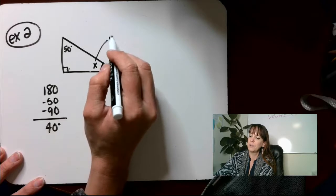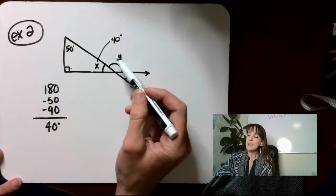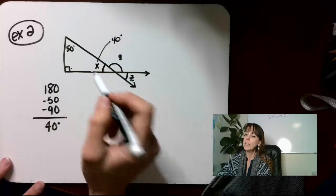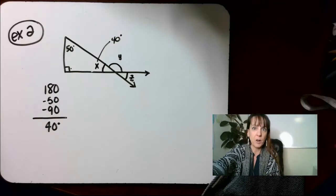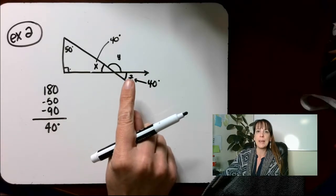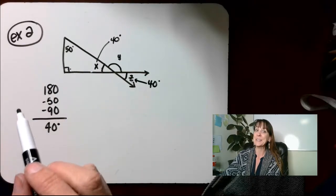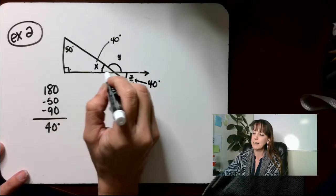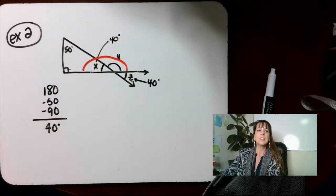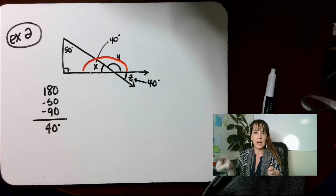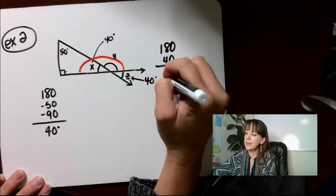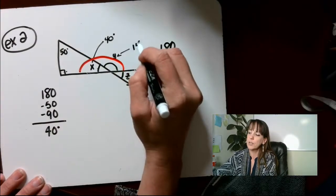So X equals 40 degrees. Now, X and Y are adjacent, and X and Z are vertical angles — see how they're across from each other? Because of that, vertical angles are always congruent, which means X and Z are both 40 degrees. Now X and Y form a linear pair — they're supplementary — because they make a whole line, forming a half circle with 180 degrees. So we take 180 minus 40 and get 140 degrees, so Y equals 140 degrees.